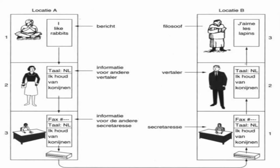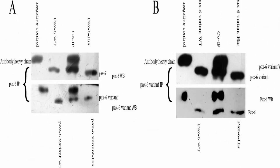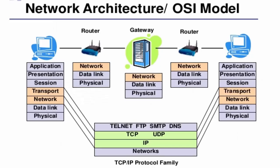Before they are then transmitted over the internet and reassembled in the right order at the destination address. IP defines how to address and route each packet to make sure it reaches the right destination. Each gateway computer on the network checks this IP address to determine where to forward the messages.